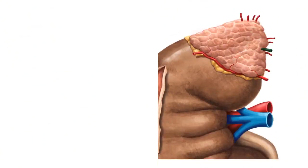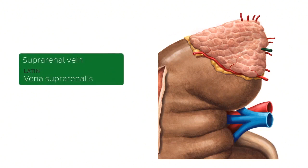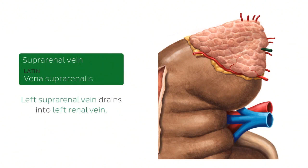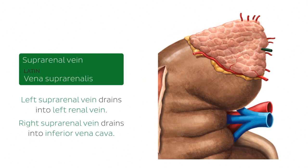From the adrenal gland, we move on to another structure — this is known as the suprarenal vein. The suprarenal veins drain the adrenal glands. The left suprarenal vein drains blood from the left adrenal gland into the left renal vein, whereas the right suprarenal vein drains into the inferior vena cava. This is important information to remember, especially on exams.